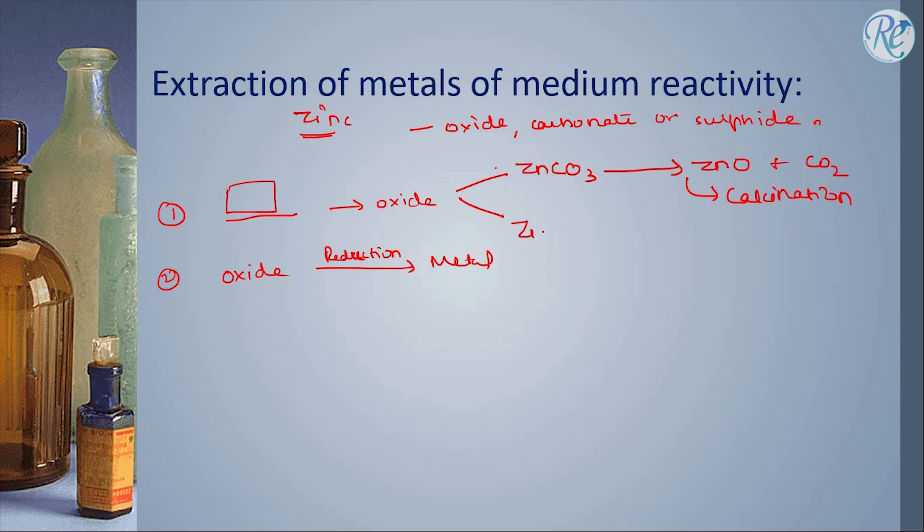But if it is present in the form of sulphide, like zinc sulphide here, it is heated in the presence of oxygen and we get ZnO plus SO2, and this process is called roasting.